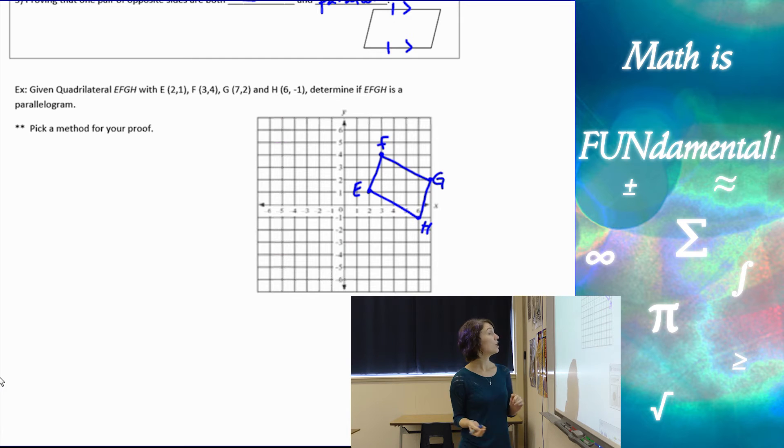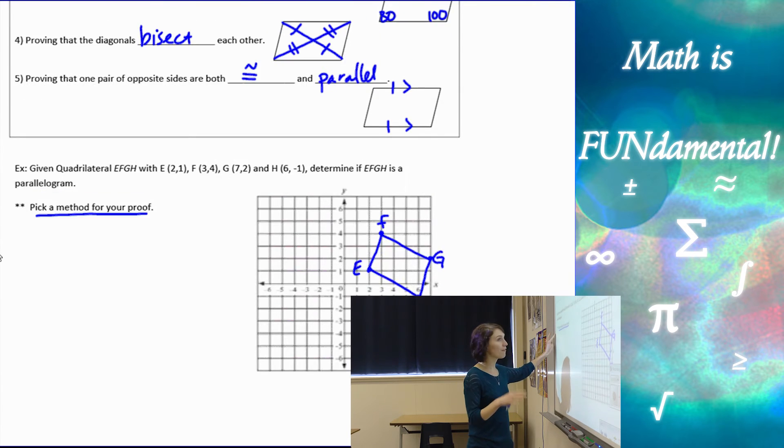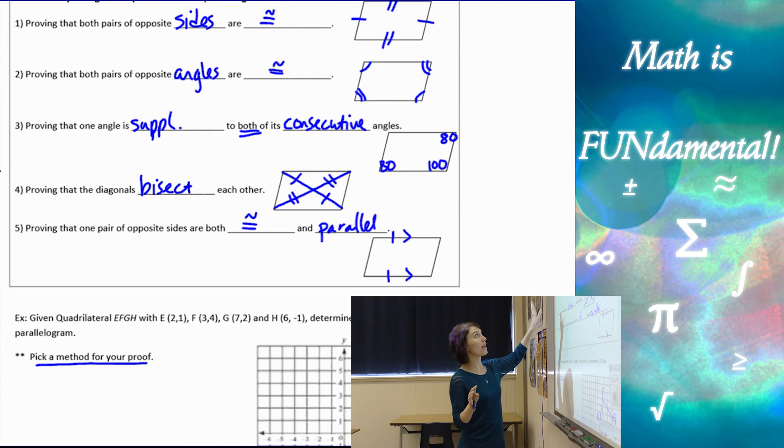First, look at all five methods we just learned and pick one, whatever you think might be easiest. Personally, if I have a problem like this, I steer away from methods two and three because it's really difficult to figure out angles if you're just given a graph. Figuring out the angles is more complicated than figuring out the lengths of the sides or whether they're parallel.